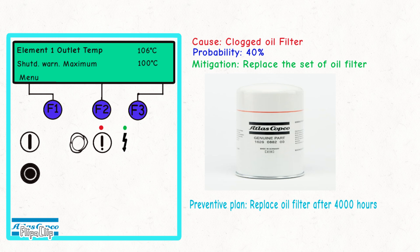As part of your preventive maintenance plan, the oil filter should be replaced every 4,000 running hours. This will help ensure consistent oil flow and keep your compressor running efficiently.